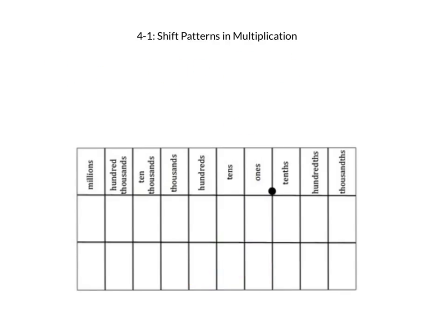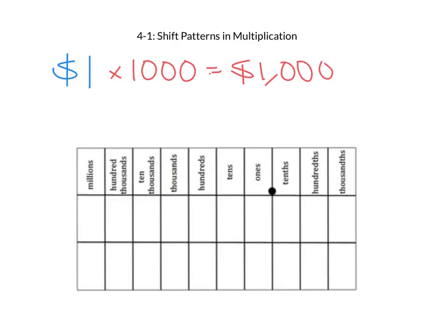Now we are going to look at taking that same $1 bill and multiplying it by 1,000. We would end up with $1,000, which we can fill into the place value chart. We started with one $1 bill, and after multiplying by 1,000, we have $1,000. The digit 1 shifted 1, 2, 3 places to the left, and we filled in the remaining places with zeros. The general idea is when you take a number and multiply it by a multiple of 10, the digits don't change — they just shift to the left. There are three zeros in 1,000, so we shifted the digit 1 to the left three times.